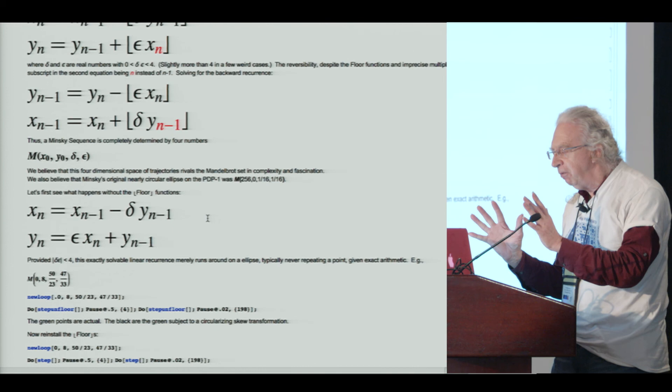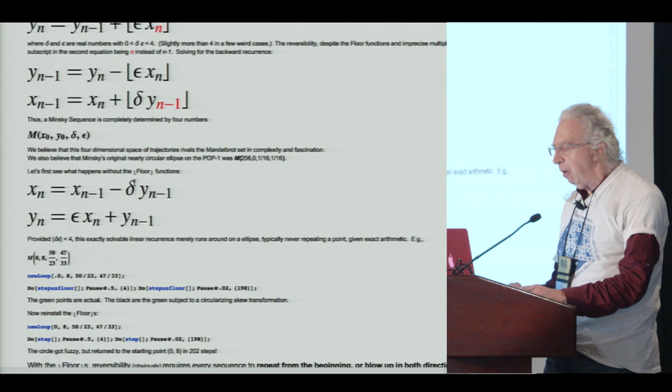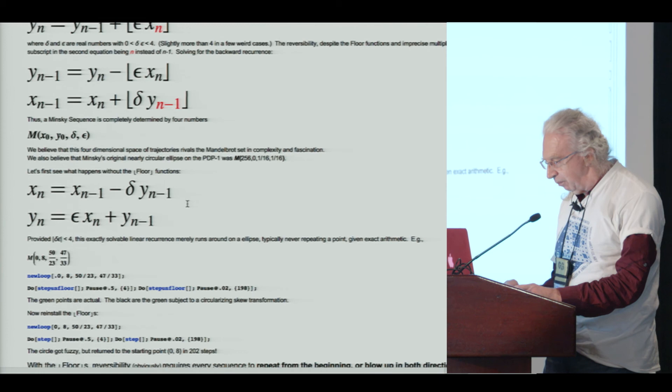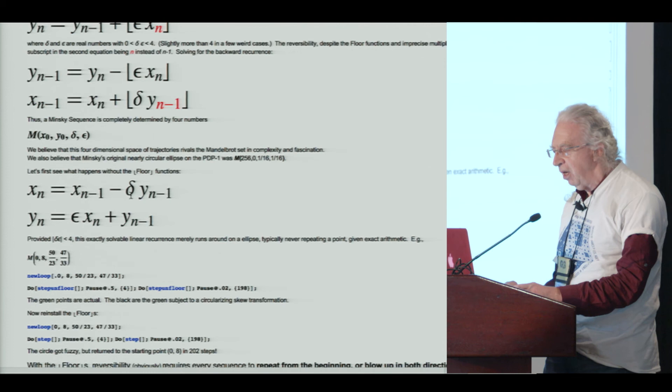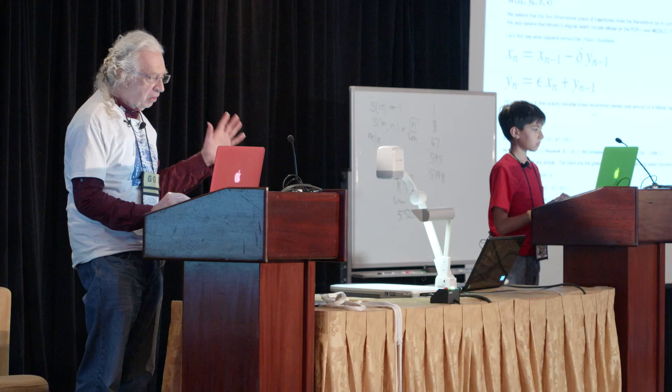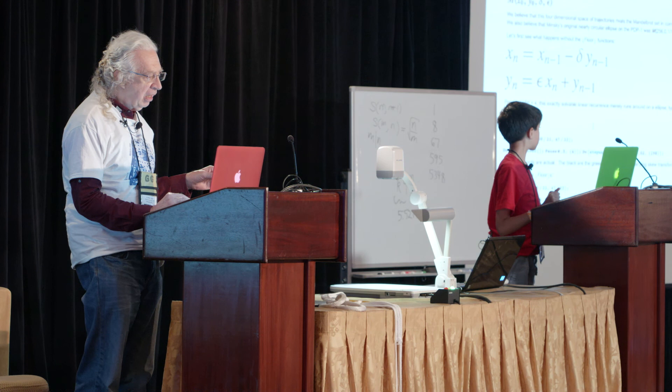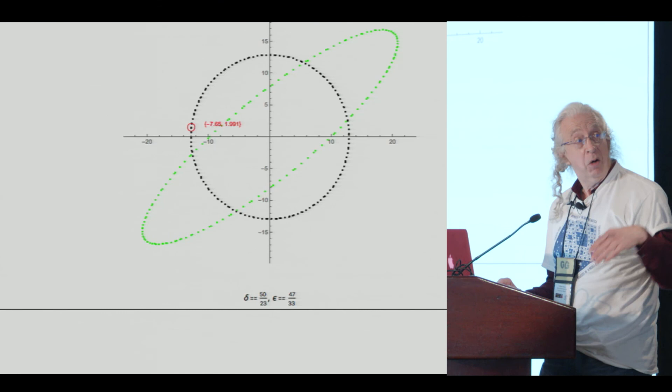Before we go into examples of the Minsky algorithm, let's remove the floor functions and see what the simplified mathematics produces. If we remove the floor functions, this is an exactly solvable linear recurrence. In fact, it will draw an ellipse as long as the absolute value of delta times epsilon is less than four. Starting at point (0, 8) with two peculiar rational numbers, here is what this thing draws if you just run it for consecutive n.